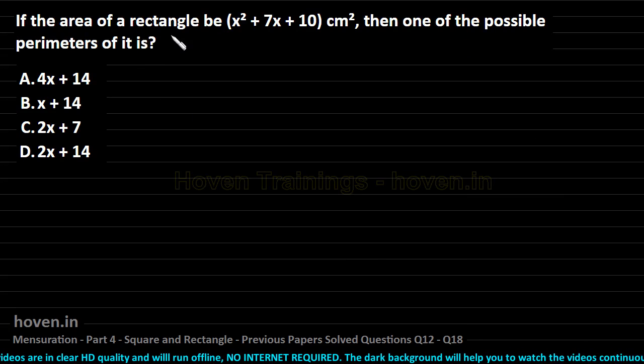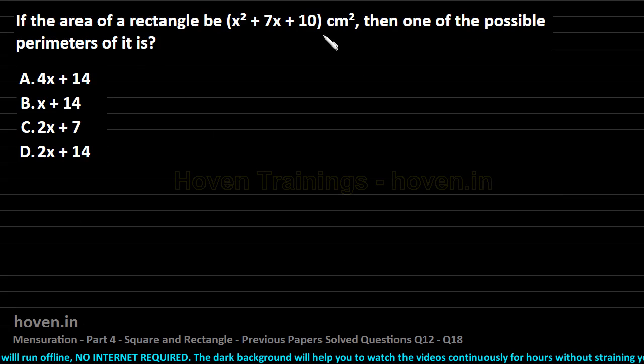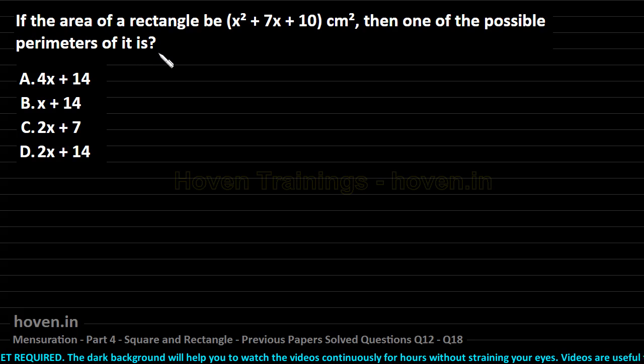If the area of a rectangle be x square plus 7x plus 10 square centimeter then one of the possible perimeters of it is. Perimeter has to be found out. The expression for the area has been given to us.